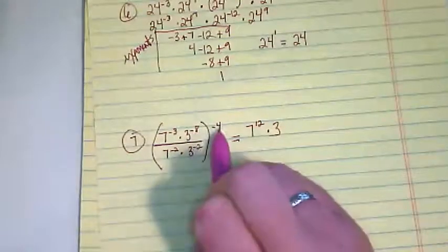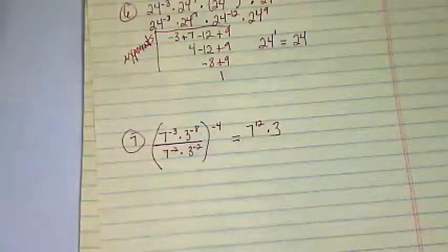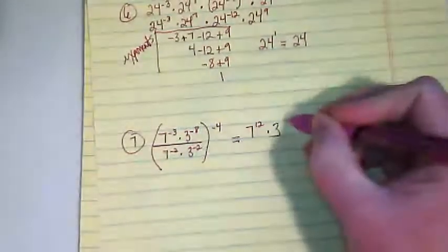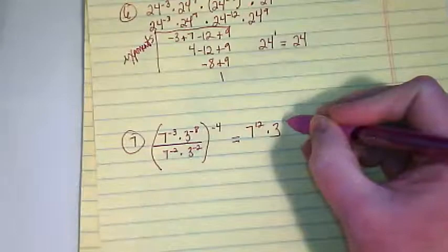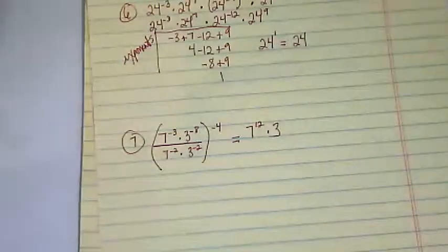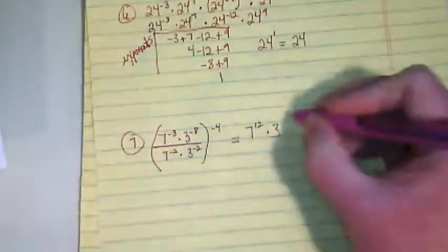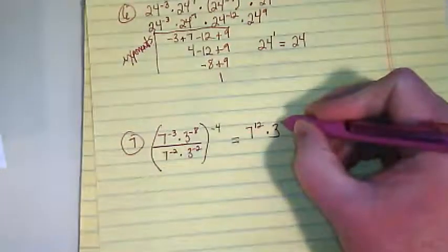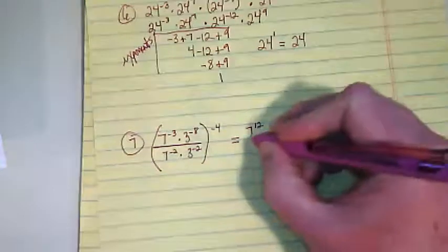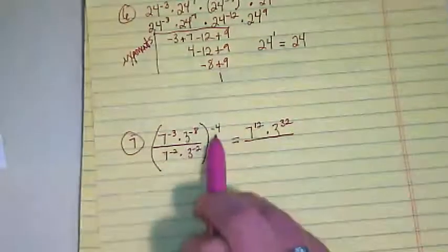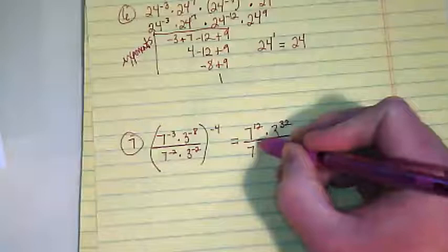And negative 8 times negative 4 is going to give us a positive number, and that's going to be a positive 32. Oops, a little paper on the side over here I just almost lost. So that's going to be 3 to the 32. The denominator, negative 4 times negative 2, and the exponent is going to be positive 8.